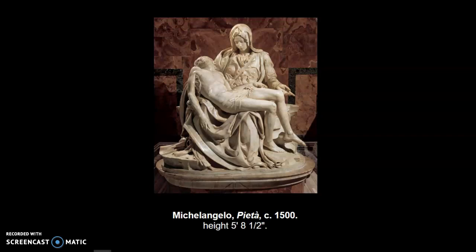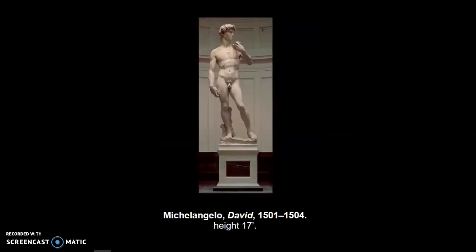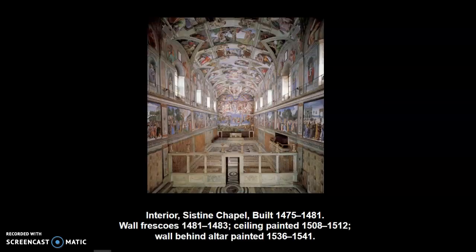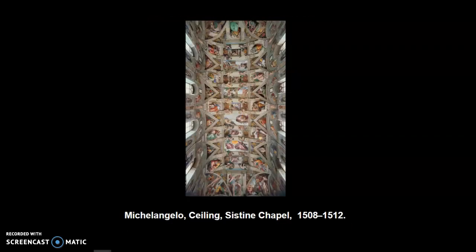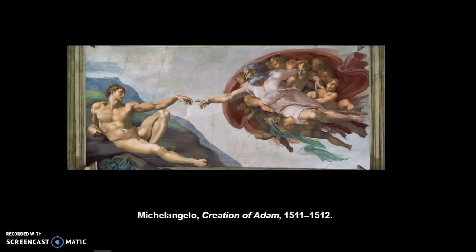So young, nobody believed that someone as young as him had done this. After delivering it on commission, he heard rumors that other people were taking credit for his work. So he climbed up on the lap of the Virgin Mary and actually carved his name — 'Michelangelo Buonarroti Florentine did this,' written in Latin. It's inscribed on there for all of perpetuity. Nobody's taking credit for Michelangelo's work. I could take a whole class to discuss this one sculpture, but be sure to check out the Michelangelo video posted on Blackboard — it'll give you a lot more information, especially about the Sistine Chapel ceiling.